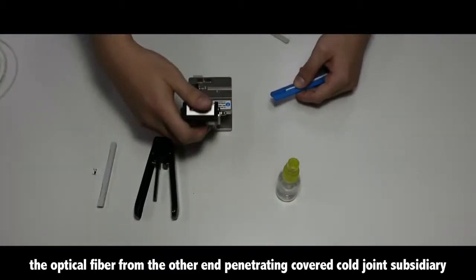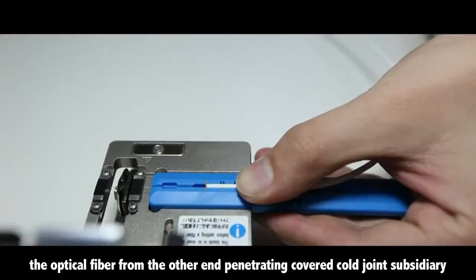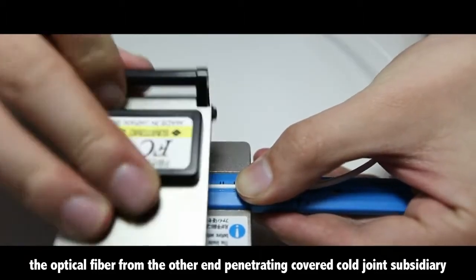Drop the aluminum ball retard to choose from the other end, penetrating the covered co-joint.